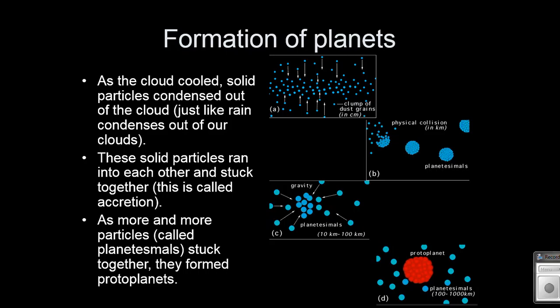It's called accretion. That disk around it is called an accretion disk. So you've got all our little particles, and all our little particles are excited. They're moving around. There's gravity that's pulling on one another and they start to run into one another. And that's where the physical collision happens.